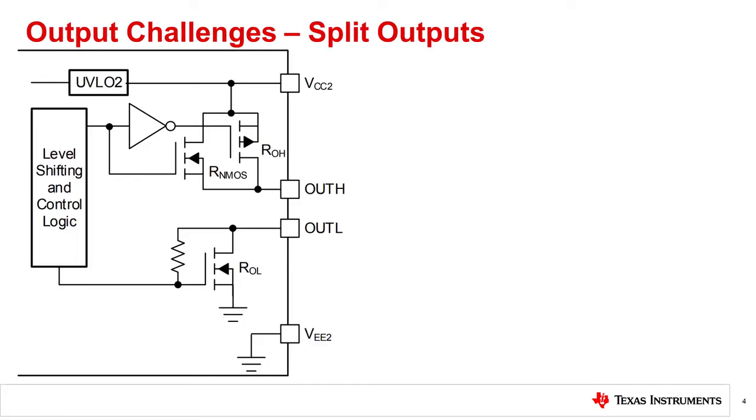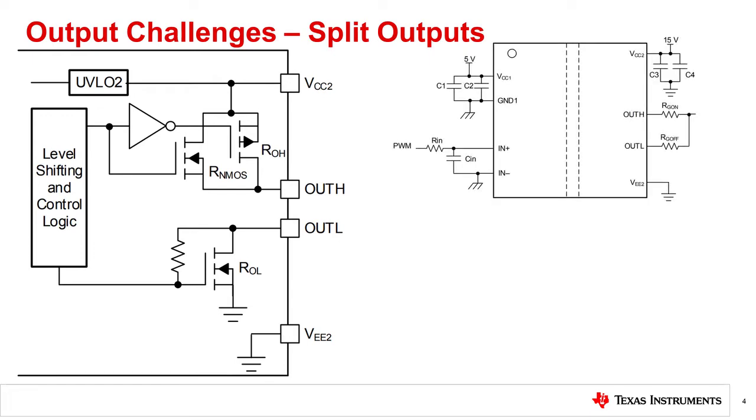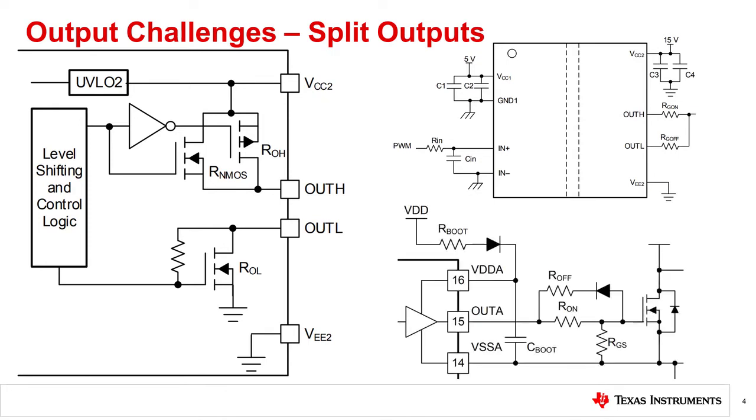Some drivers offer split structures for high and low outputs, allowing independent gate drive resistors for turn-on and turn-off. This option is common in IGBT systems where asymmetric turn-on and turn-off delays incentivize different gate drive strengths. Split outputs can also be emulated by using a parallel branch with a series diode, though this increases component count and loop area.